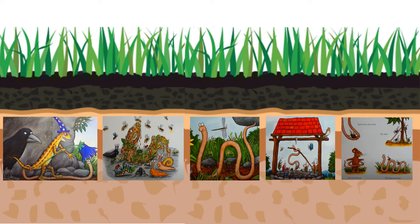What you need to do is decide which one of these pictures comes first in the story. The first picture we've got here is a picture of the lizard and his servant, and he's holding that magical flower and he's telling Superworm that he wants him to go and find the treasure in the soil. Does that happen at the beginning? Does it happen in the middle? Does it happen at the end? You've got to decide where that goes.